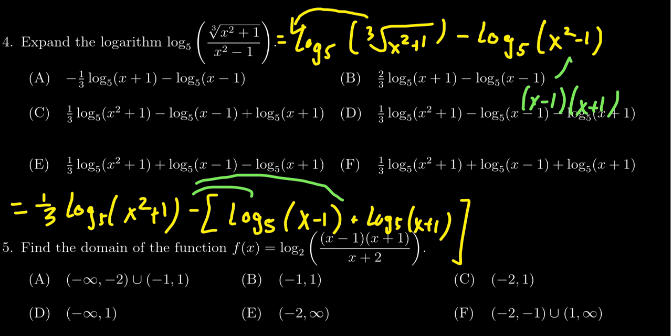So you're going to end up with one-third log base five of x squared plus one minus log base five of x minus one, and then also a minus log base five of x plus one. Don't forget to distribute the negative sign right there. And so then we see, the correct answer is going to be D.